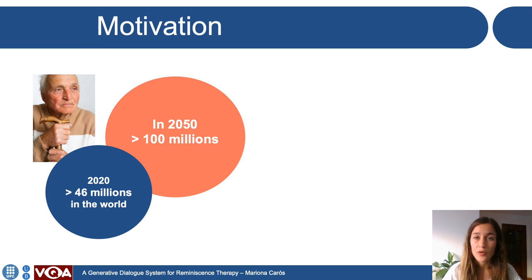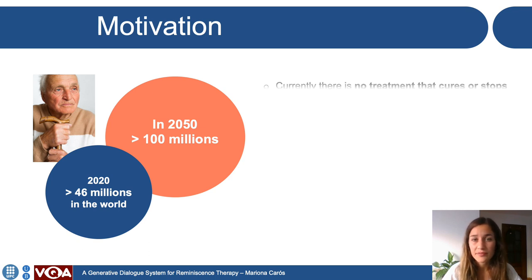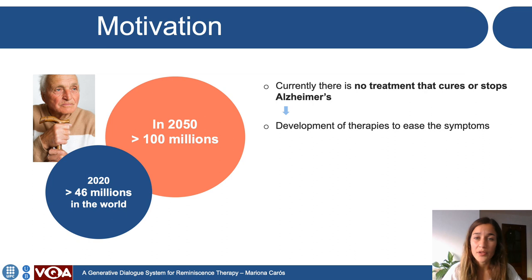Worldwide, around 50 million people have dementia, and there are nearly 10 million new cases every year. It is estimated to double by 2050. Currently, there is no treatment that cures or stops Alzheimer's. Research has been only successful in terms of developing therapies that ease the symptoms, without addressing the cause.